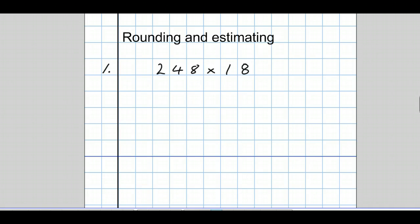Well, first we round each of the numbers involved and we round it to one significant figure. We get rid of everything other than the first figure. Now, that 2 was in the hundreds column, so I need two zeros to pad it out and push the 2 into the hundreds column.